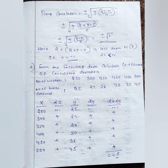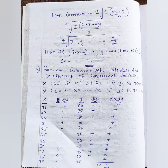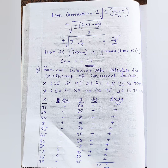We substitute n equals 5: 2c minus n divided by n gives 2 into 5 minus 5 divided by 5, which equals plus or minus root of 1. We compare 2c to n. Since n equals 5, if 2c is greater than 5, then Rc equals positive 1. If 2c is less than 5, then Rc is negative.